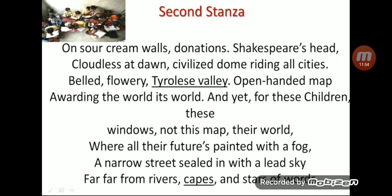'A narrow street sealed in with a lead sky' — the sky is indirectly compared with lead; the point of comparison is that both are dull and sad — so this is metaphor. Then: 'far far from rivers, capes and stars' — the word 'far' is repeated twice, which is repetition for poetic effect.